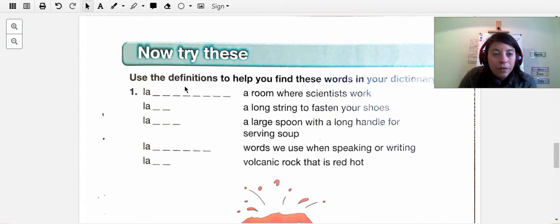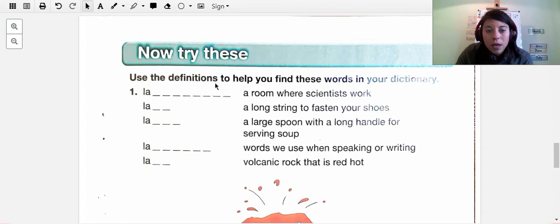And finally there's a third part to all of this. It says now try these. This is the last page. Good stuff. Use the definitions to help you find these words in your dictionary. So, a room where scientists work, L-A. So you've been in this place before. We have one at school. That's all the hint that I'm going to give.